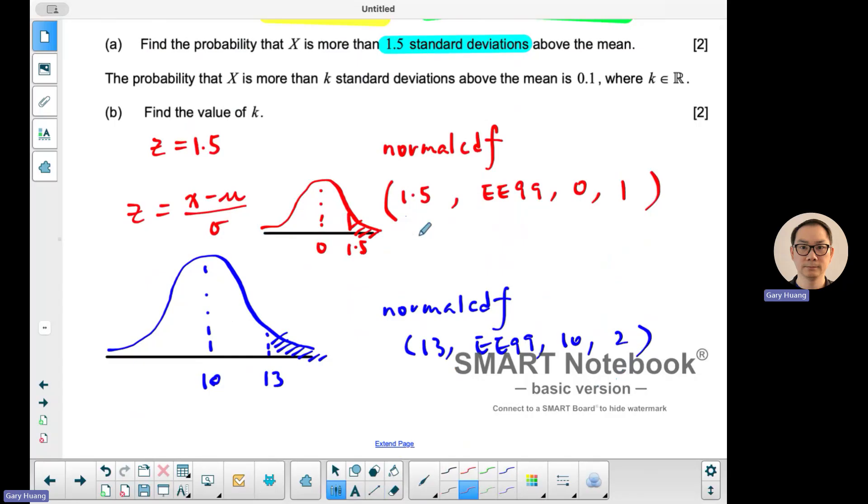So I punch in the calculator and I'm getting 0.0668 to 3 significant figures. Either way it should give you the same answer.